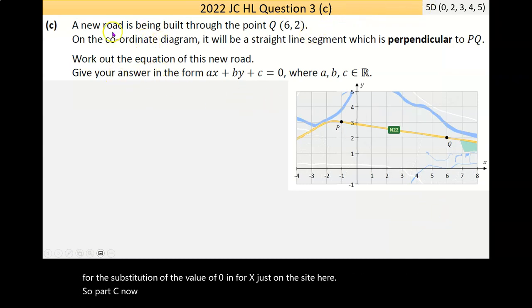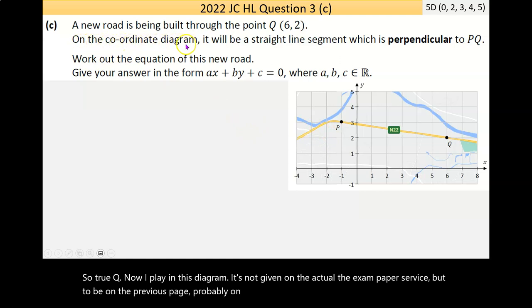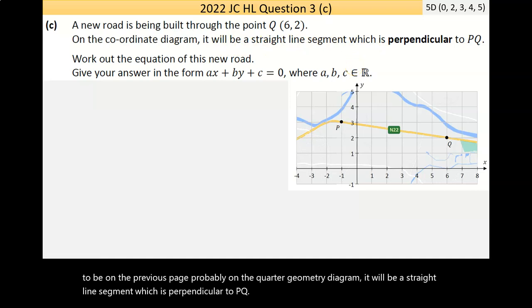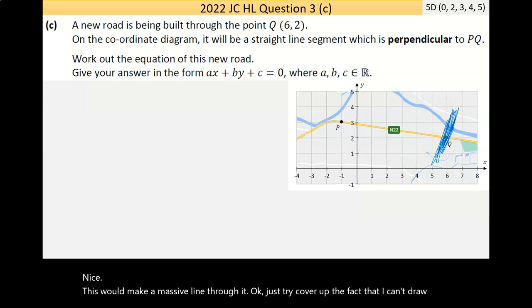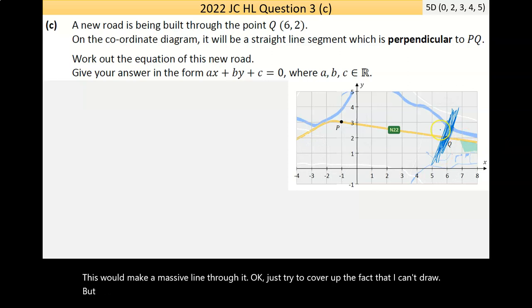Part C, it's only worth 5 marks. A new road is being built through the points 6, 2, through Q. On the coordinate geometry diagram, it will be a straight line segment which is perpendicular to PQ. Perpendicular means it crosses at a right angle.